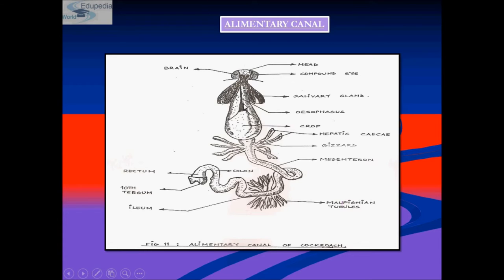Food then enters the esophagus and then the crop, which temporarily stores it. Food is then passed into the gizzard, which acts as a grinding chamber. At the junction of the gizzard and stomach is a valve called the stomodeal valve, which allows only thoroughly digested food into the stomach and prevents regurgitation.